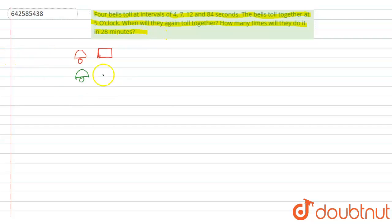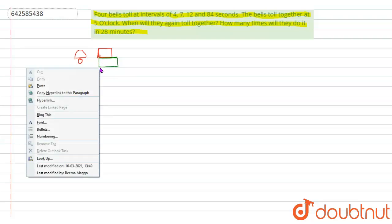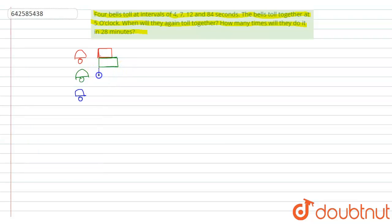The second bell rings after an interval of 7 seconds, so the green rectangle represents the time duration of 7 seconds after which the green bell rings. The third bell, blue in color, rings after every 12 seconds. So this bar represents the time duration of 12 seconds.